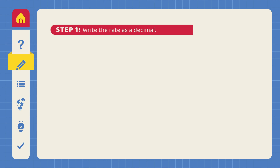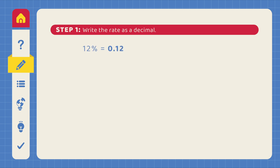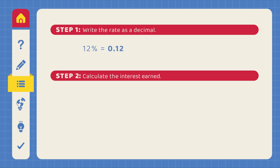Step 1: Write the rate as a decimal. Step 2: Calculate the interest earned.